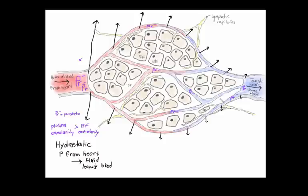If we just kept losing fluid and didn't pull it back in, we would lose blood pressure pretty quickly. We have another opposing force that pulls the fluid back in, and that's called colloid or osmotic pressure. Colloid osmotic pressure pulls fluid back into the blood.